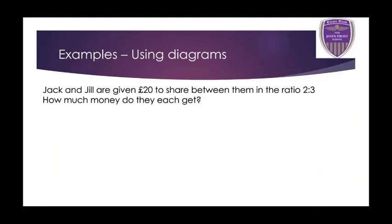So Jack and Jill are given 20 pounds to share between them in the ratio 2 to 3. How much money do they each get? Generally, if the names are told in a certain order, the names and the ratios should match up. Jack comes first, so he gets the 2, and Jill comes second, so she gets the 3 — two parts and three parts.